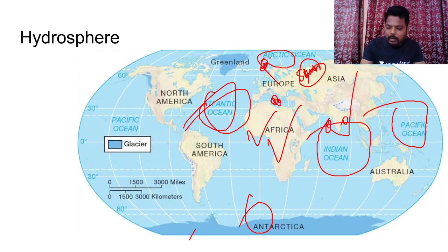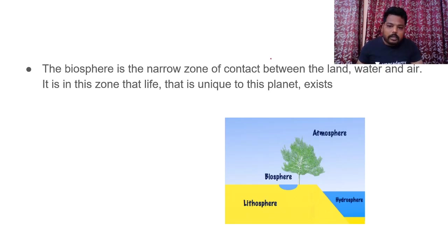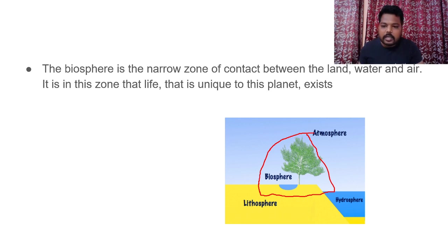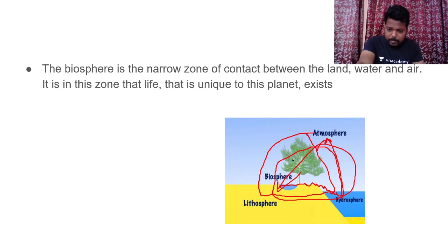Life sustenance on earth requires the interaction of atmosphere, lithosphere, and hydrosphere. For example: evaporation from the hydrosphere, condensation in the atmosphere, rainfall on the lithosphere, and surface runoff through rivers returning water to the hydrosphere — this entire process is a cycle. Because of this interaction between these three domains, we have the biosphere where life can exist.